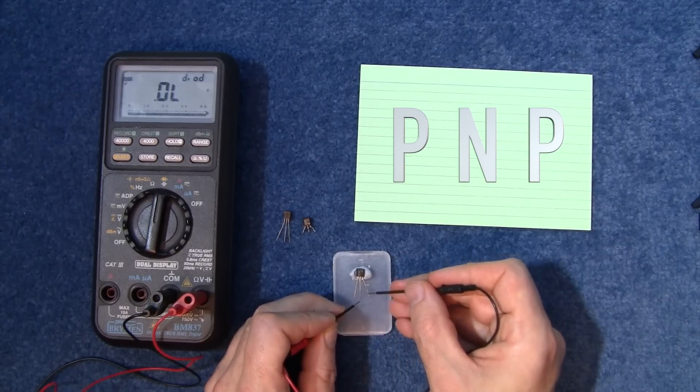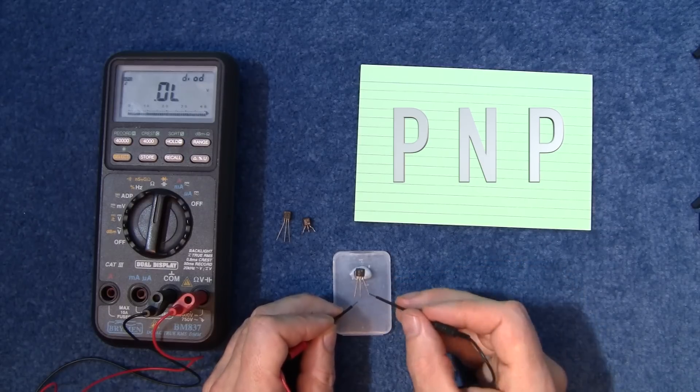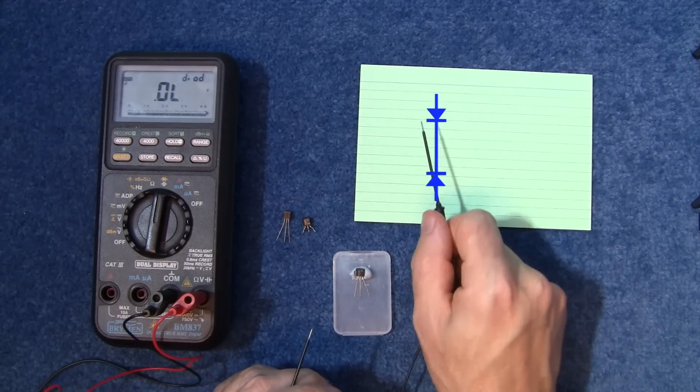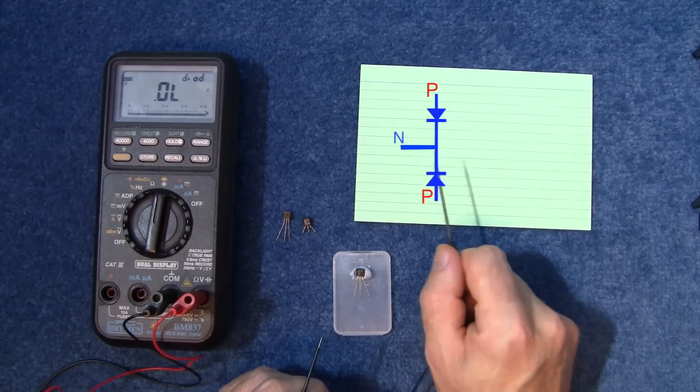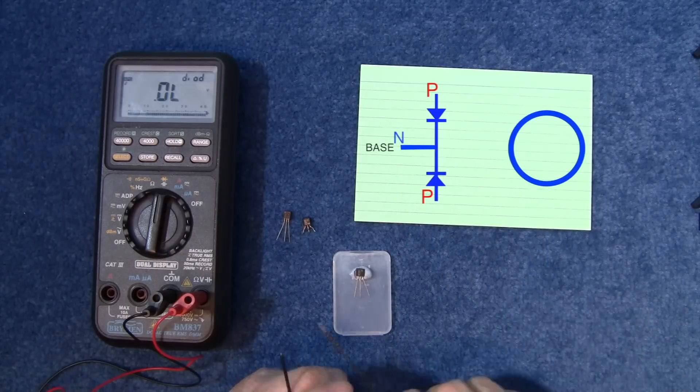And again, that makes this one the base. And that is these two diodes sort of facing inwards. There's your base and that would be the symbol for it.